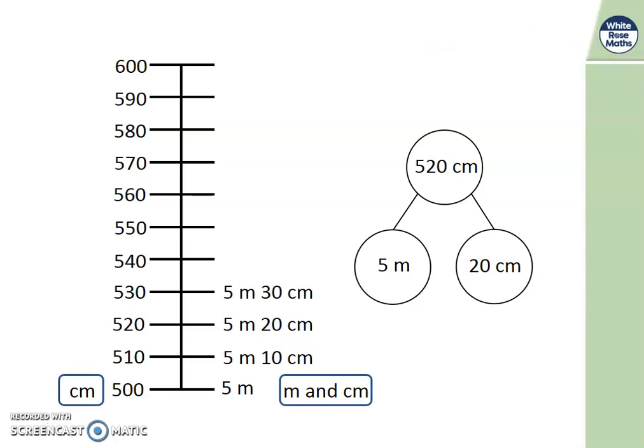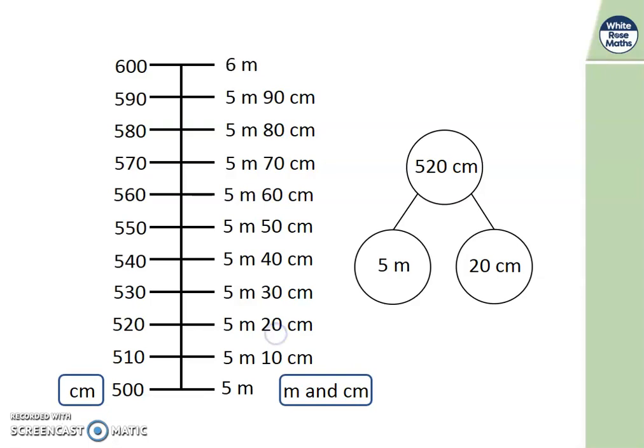Let's see how you did. 5 metres 30. 5 metres 40 centimetres. 5 metres 50 centimetres. 5 metres 60 centimetres. 5 metres 70 centimetres. 5 metres 80 centimetres. 5 metres 90 centimetres. What will 600 be? Well done if you said 6 metres. Let's move our learning on.